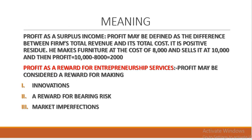Profit is a surplus income — the difference between the firm's total revenue and total cost. If the total revenue is more than the total cost, then the entrepreneur is having profit. It is a positive residue. For example, if he is making furniture with a cost of 8,000 and sells it for 10,000, the total receipt is 10,000 and total cost is 8,000, so the difference is 2,000. If total cost is more than total revenue, then he is incurring a loss.